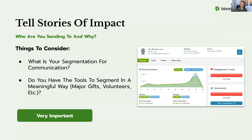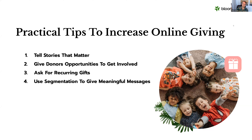Think about how you want to segment the communication moving forward. If you're giving donors the opportunity in the donation process to tell you which programmatic areas they're interested in, you can segment those communications later and approach them differently. At Bloomerang we talk about segmenting by capacity too — these folks have lower capacity, so we'll ask them to become part of a monthly donor campaign; those with higher capacity, approach a little bit differently. Think through those different segments and how you can approach each one.